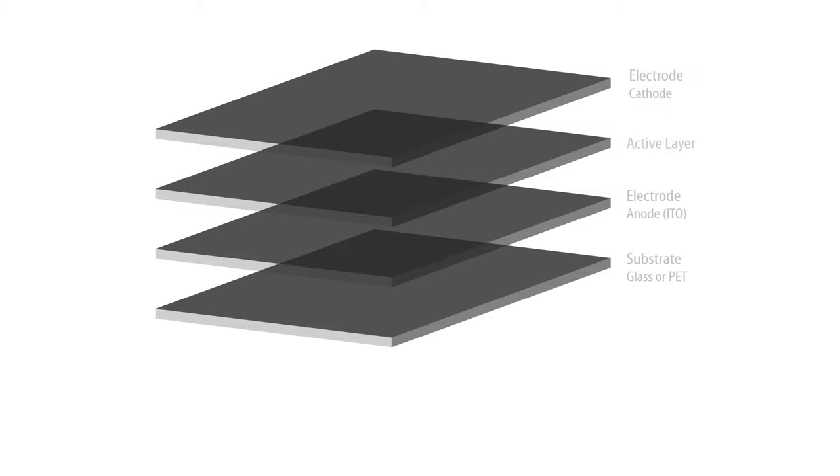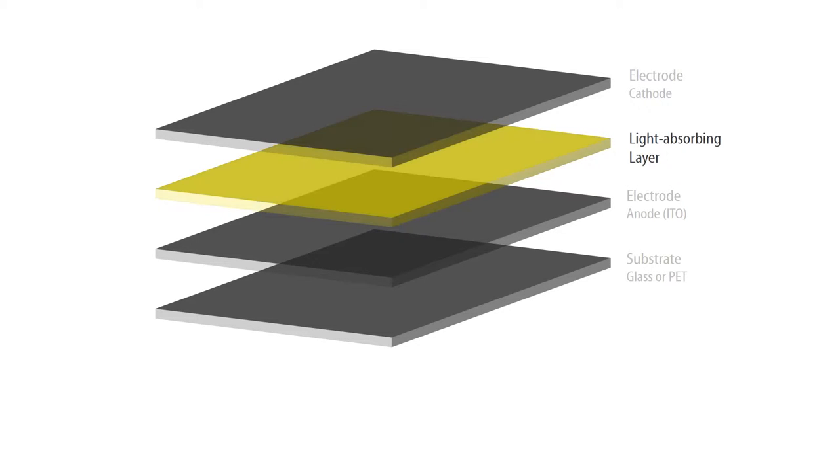The active layer is situated between two electrodes. The active layer consists of a semiconductor which, in the case of an OLED, conducts electricity only when voltage is applied to the electrodes, and in the case of an organic solar cell, when light is absorbed by the cell.